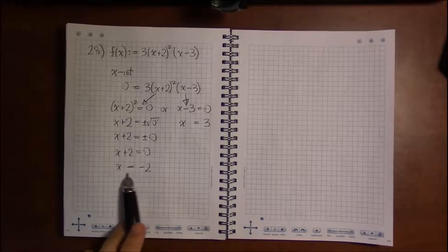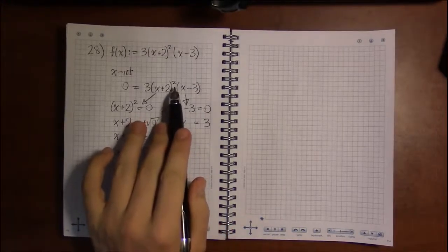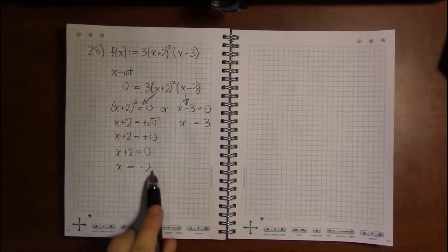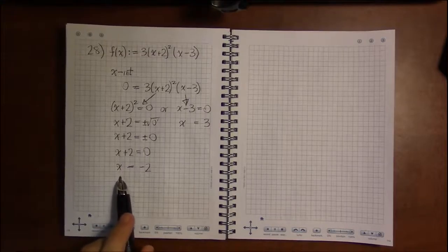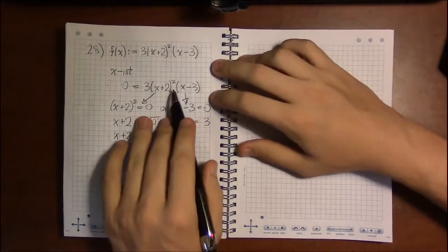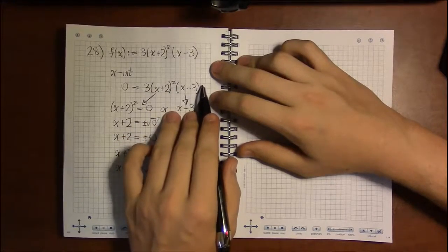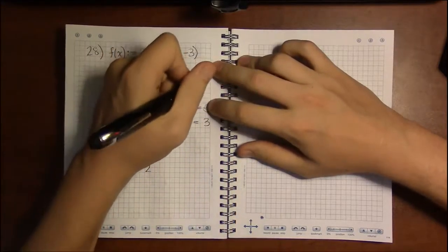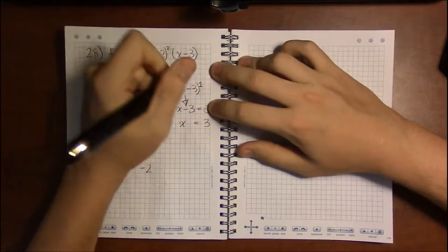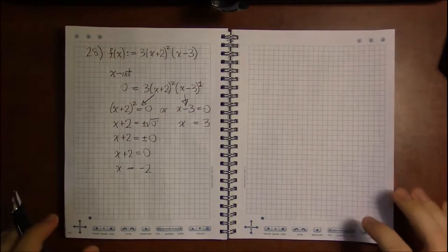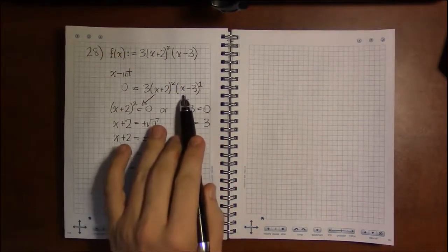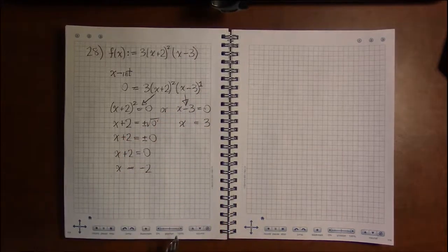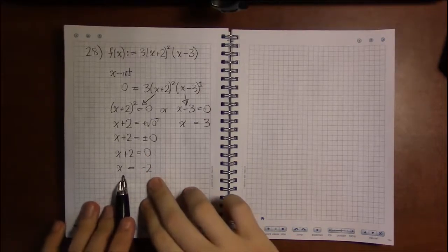But there's more to it than just that. It turns out this 2 here has an impact on how this x-intercept looks graphically. So we have the exponent of 2 here. I'm going to want to contrast it with this exponent, but I don't have an exponent. Well, it's just like with multiplying by 1—anything to the first power is just itself. So (x - 3) can be written as (x - 3) to the first, because both those things are equal.